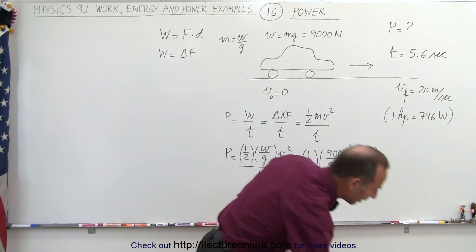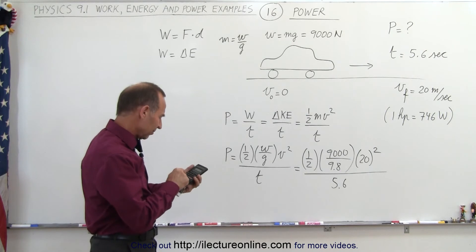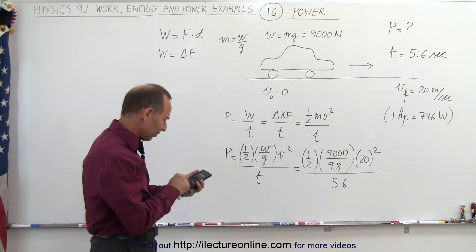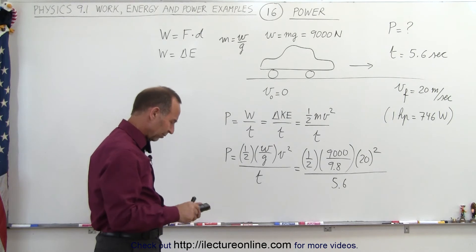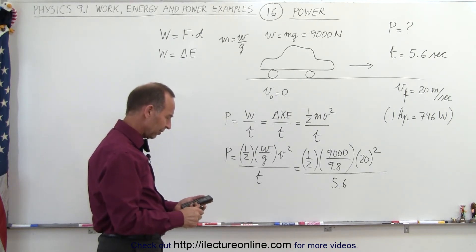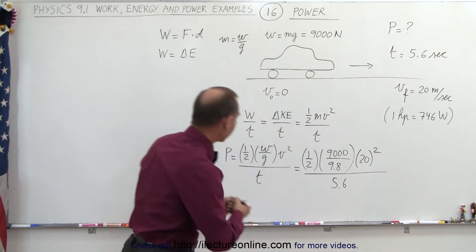Let's see what that is equal to. So 0.5 times 9,000 divided by 9.8 times 400 divided by 5.6. That gives us 32,000. Let's call it 32,800.